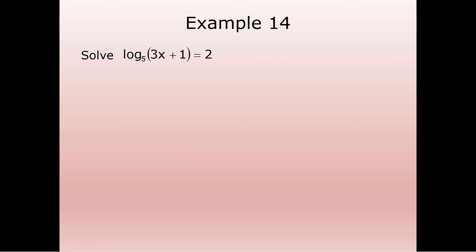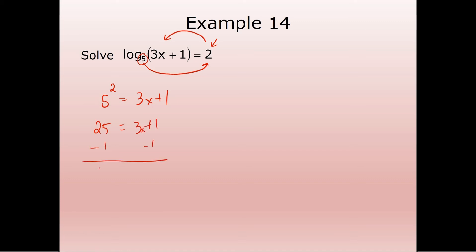Now what if we have logs and a constant? As long as we've got one log equals a constant, we can rewrite it exponentially. So five to the second power equals three X plus one. Five squared is 25 equals three X plus one. Subtract one: 24 equals three X. Divide by three: X equals eight. Always check your answer — three times eight is 24, plus one is 25. X equals eight is a solution.